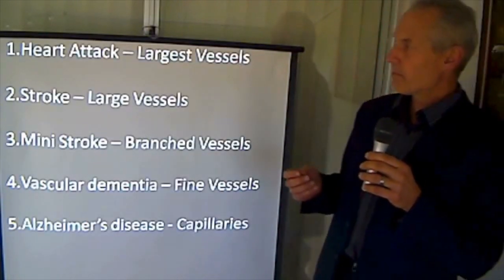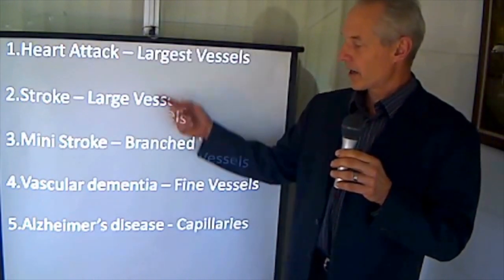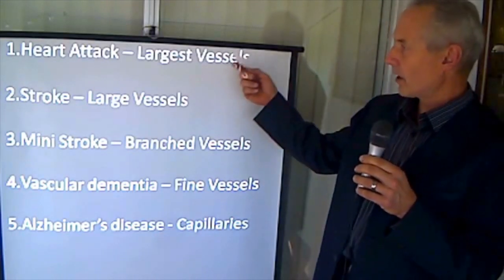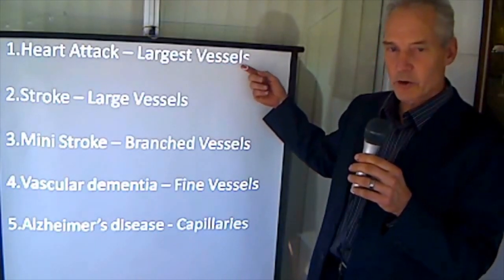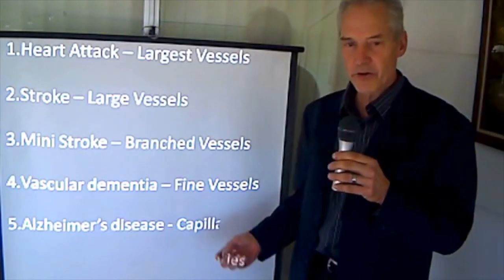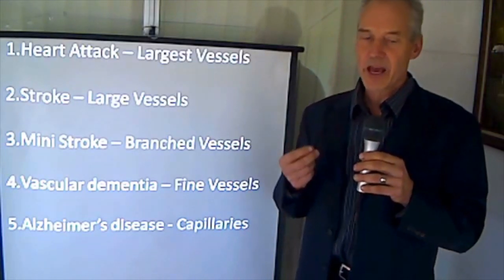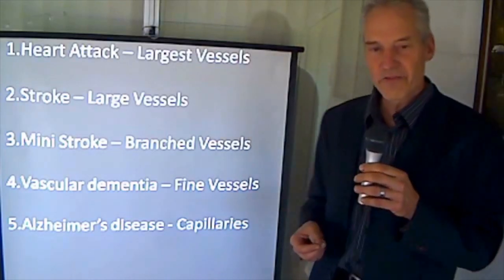So the last time we spoke about the continuum between heart attacks and Alzheimer's disease and really when you look at this continuum you see that heart attacks are associated with problems with the largest vessels, occlusions or blockages, whereas Alzheimer's has everything to do with the loss of function of the finest and smallest capillaries and then all these other diseases fit in between that.